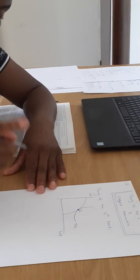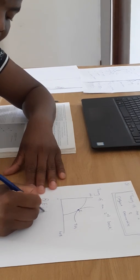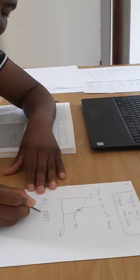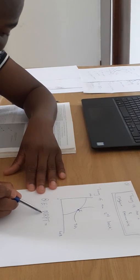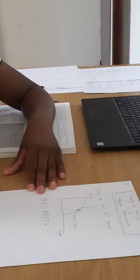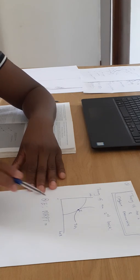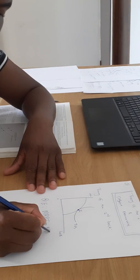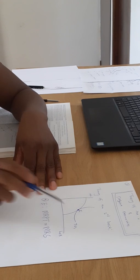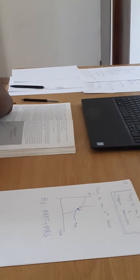At point E, the marginal rate of product transformation (MRPT) - which is the slope of the production possibility curve - is equal to MRS, which is the slope of the indifference curve. At that point, the two slopes are equal, so we maximize utility.